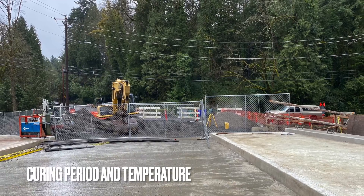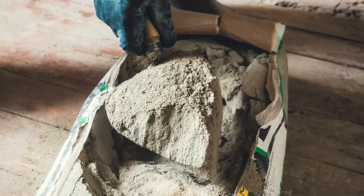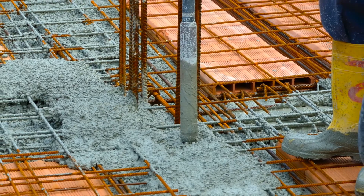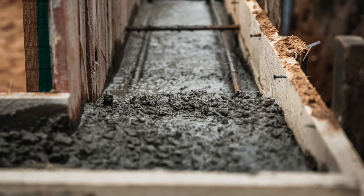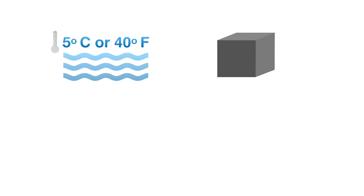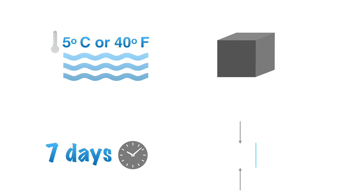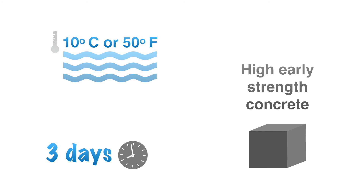The curing period depends upon the type of cement used, mixture proportions, required strength, size and shape of member, ambient weather conditions, future exposure conditions and methods of curing chosen. Since all desirable properties are improved with curing, the period should be as long as practical. For most concrete structures, the curing period at temperatures above 5 degrees Celsius (40 degrees Fahrenheit) should be a minimum of 7 days or until 70% of the specified compressive or flexural strength is attained. The period can be reduced to 3 days if high early strength concrete is used and the temperature is about 10 degrees Celsius (50 degrees Fahrenheit).